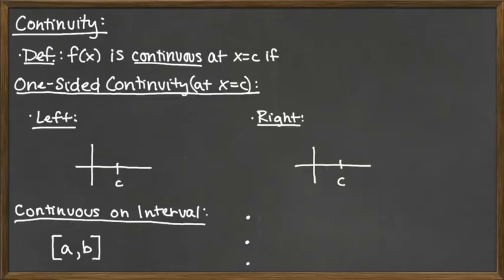We say that a function f of x is continuous at x equals c if the limit as x approaches c of the function is equal to the function value f of c.